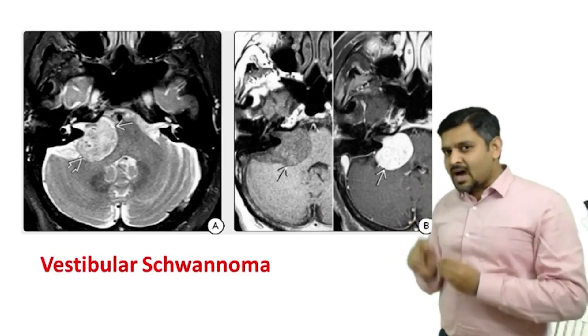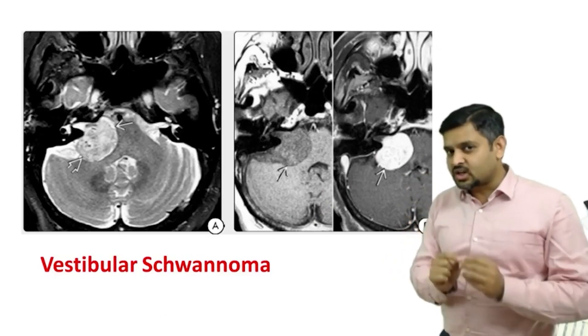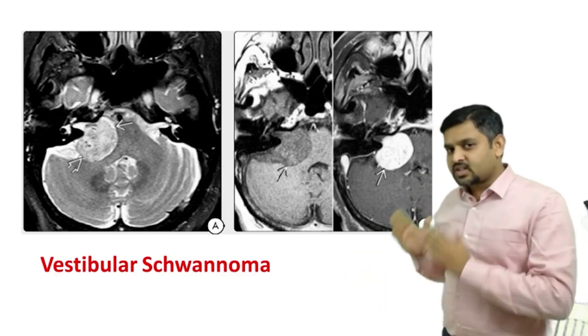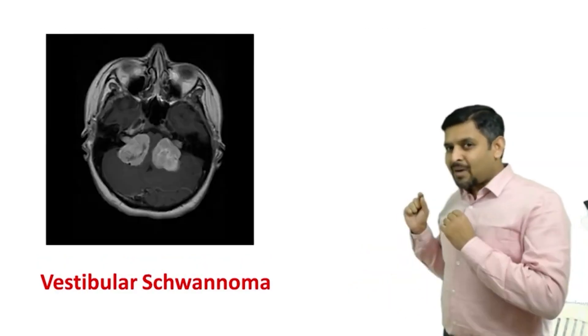If you see a mass in the cerebellopontine angle cistern with a typical ice cream cone appearance, think of vestibular schwannoma.